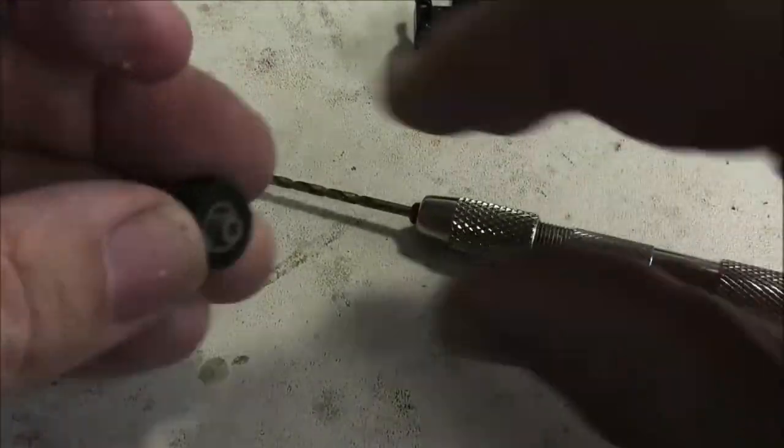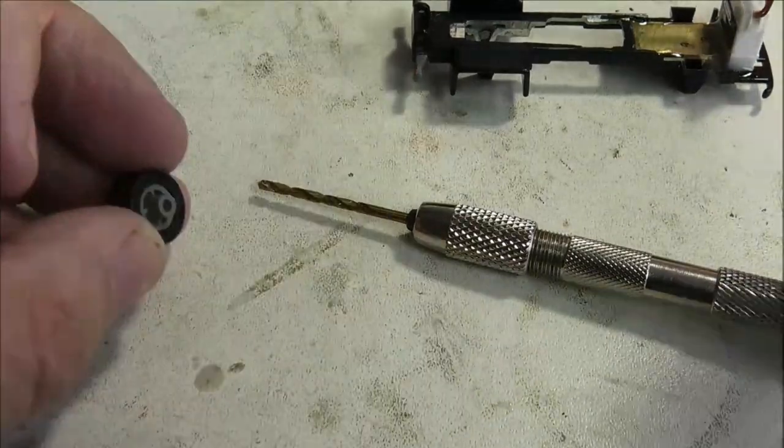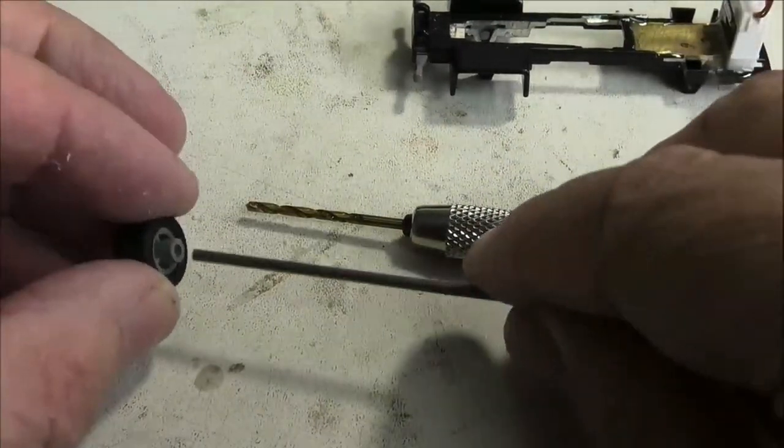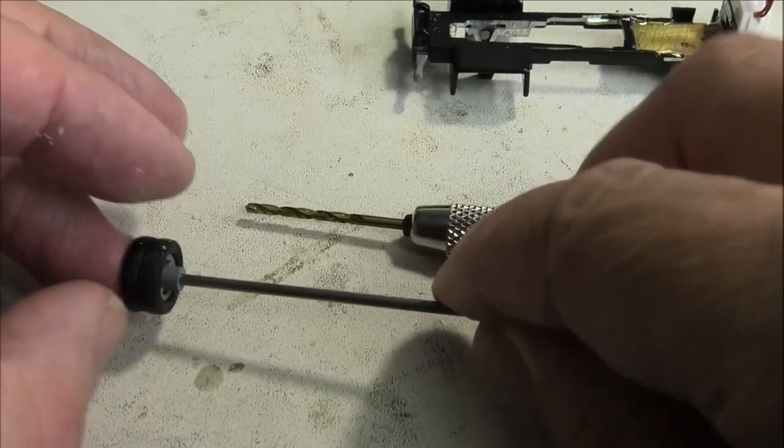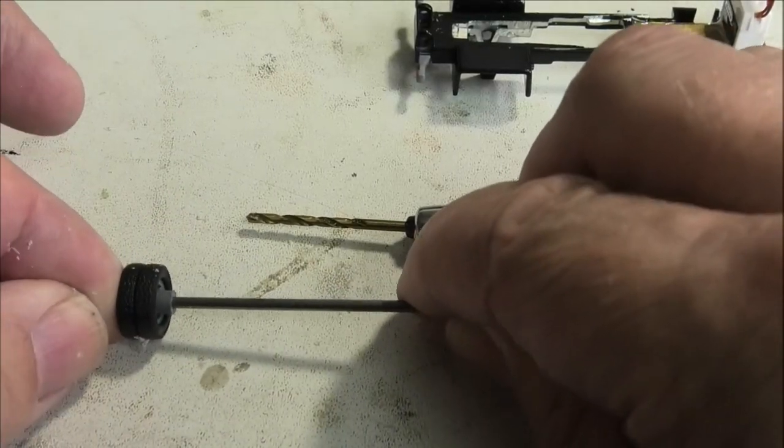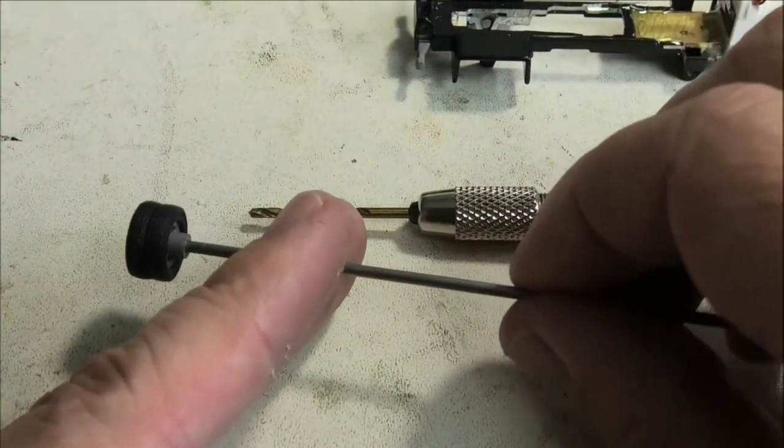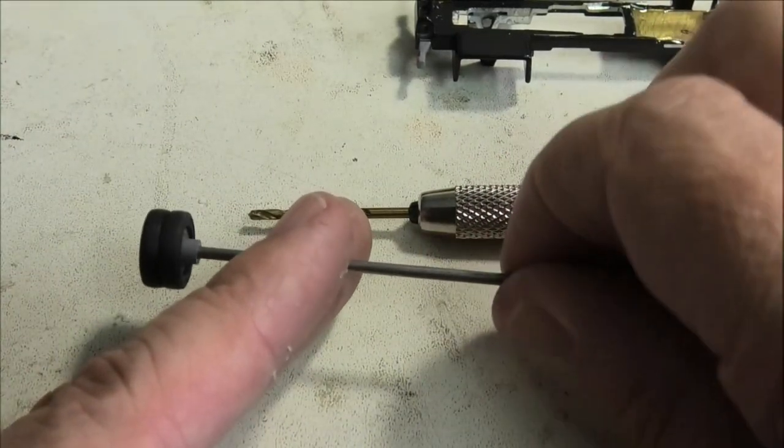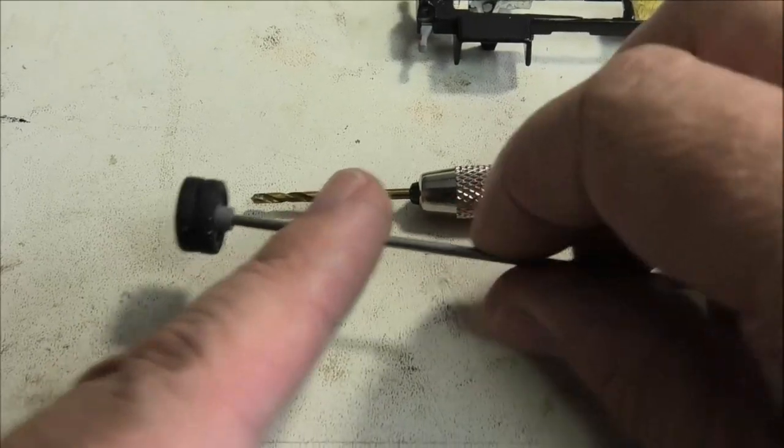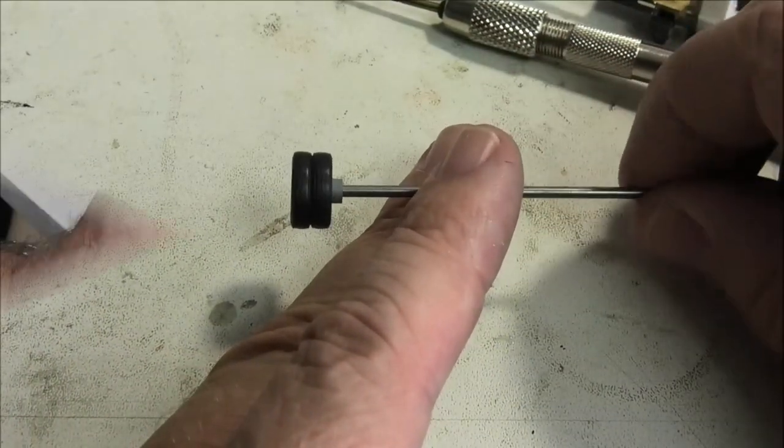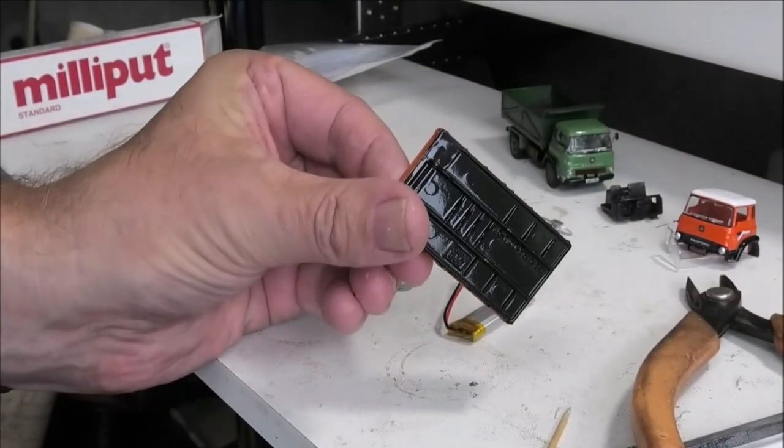And now if we insert a bit of 2mm axle material we will see that the hole has ended up surprisingly true and concentric when we rotate it. I've done this on a number of other occasions and got surprisingly good results, so although it's not foolproof it does work really well.